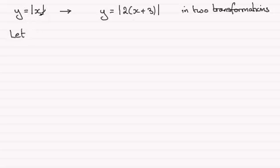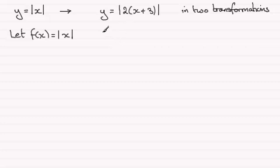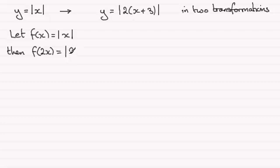So what I'm going to do is let f of x equal mod x — it's easier to work with f of x. One way that we can achieve this: looking at expanding, I notice that we're going to get 2x plus 6, so I can start to work on the 2x part by thinking about what we would get if I replace x with 2x. That would be f of 2x, which means I replace any x in the function with 2x, giving us the mod of 2x.